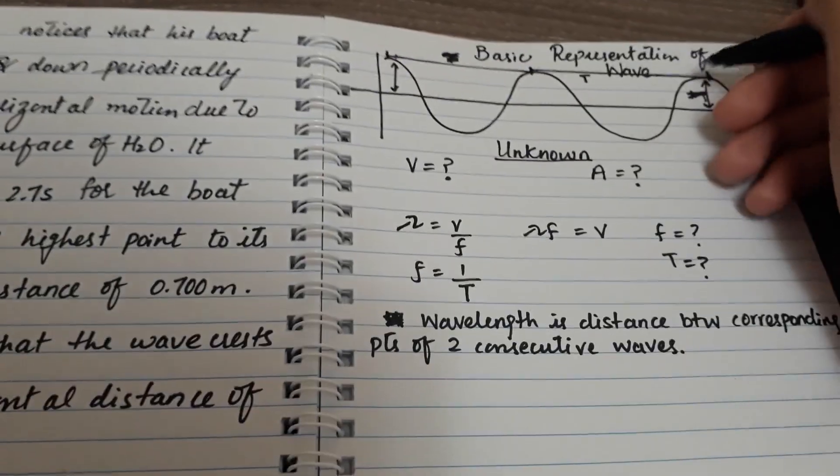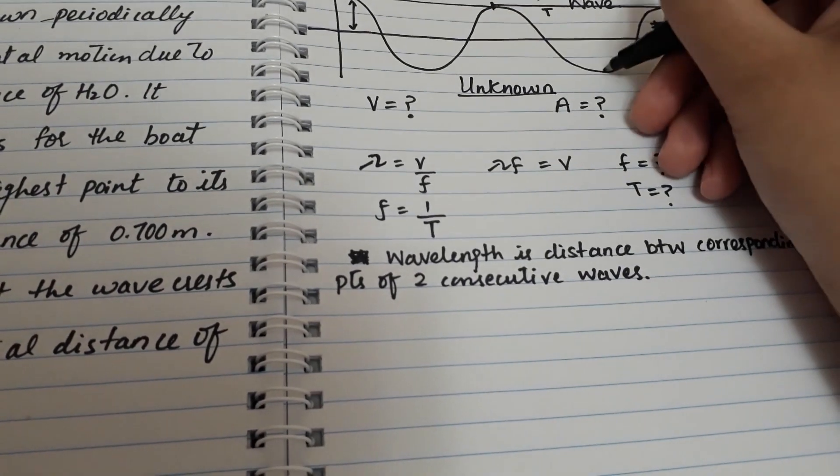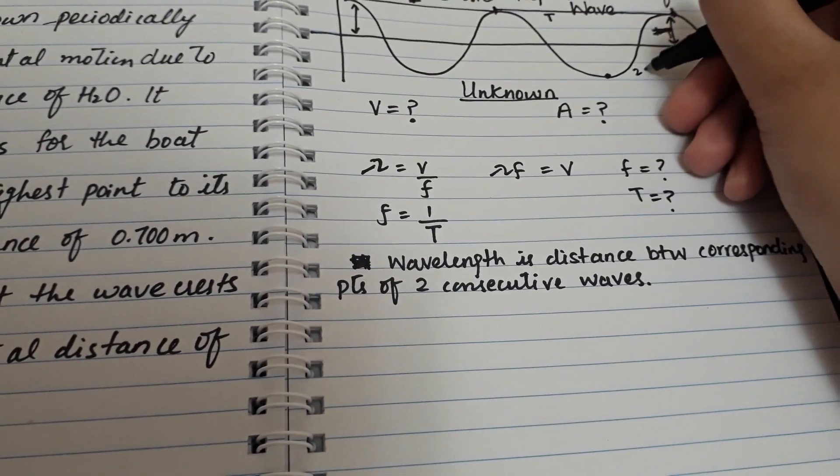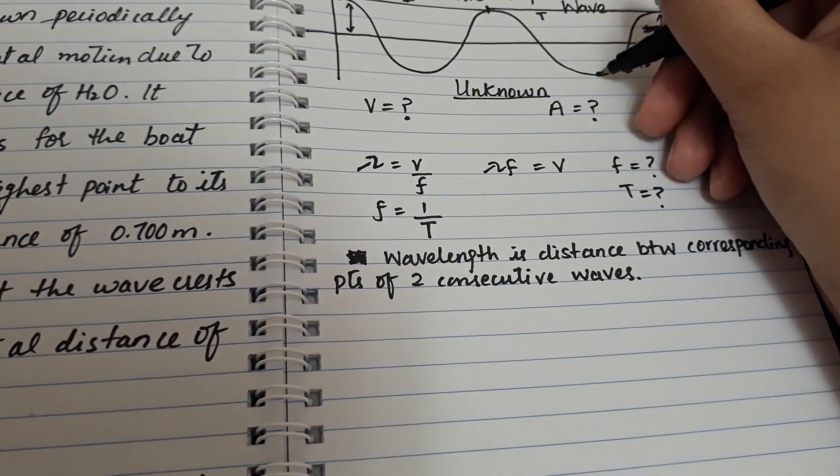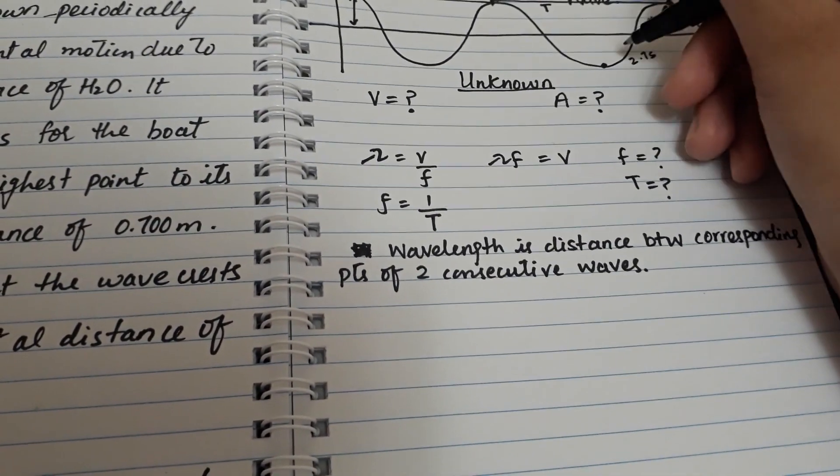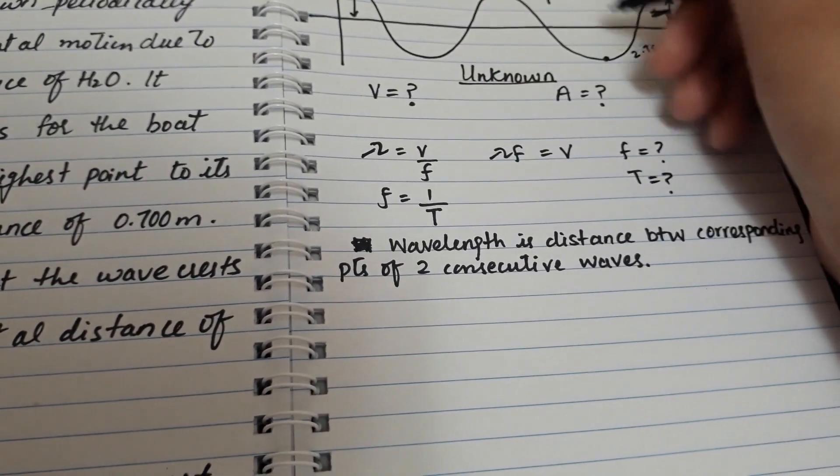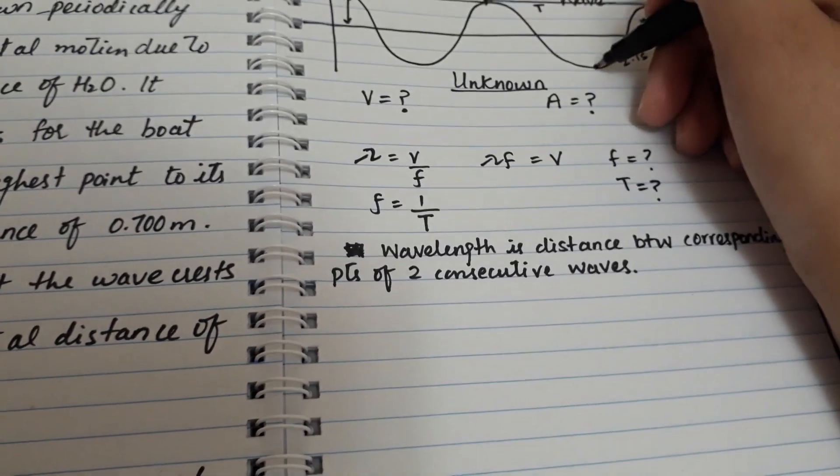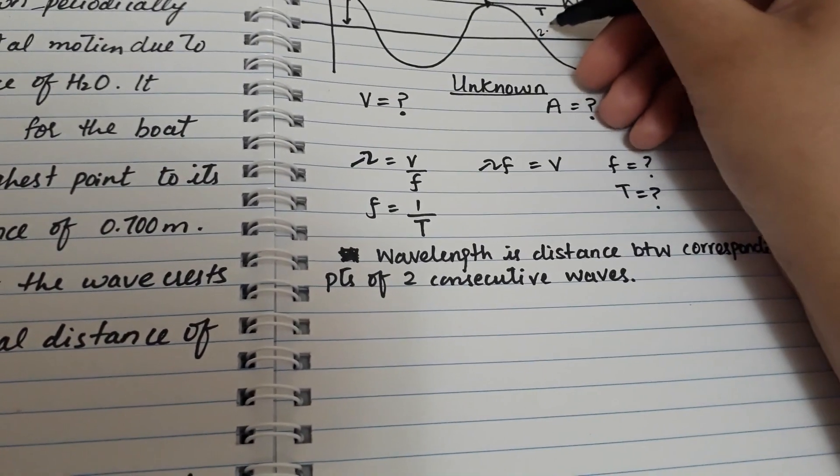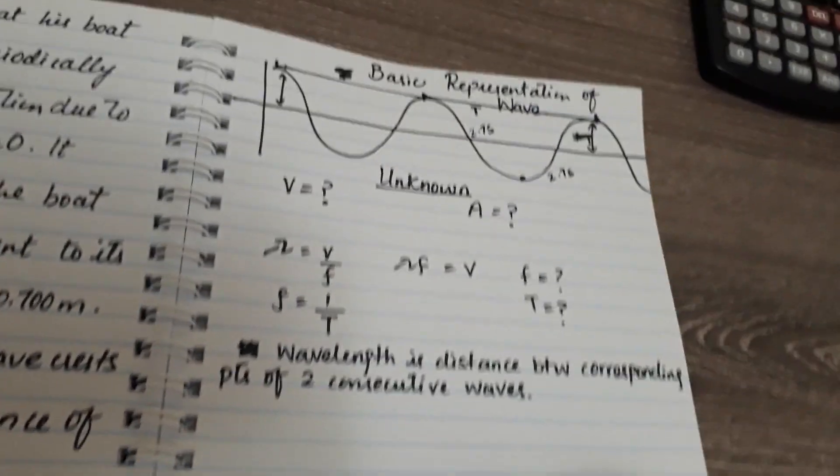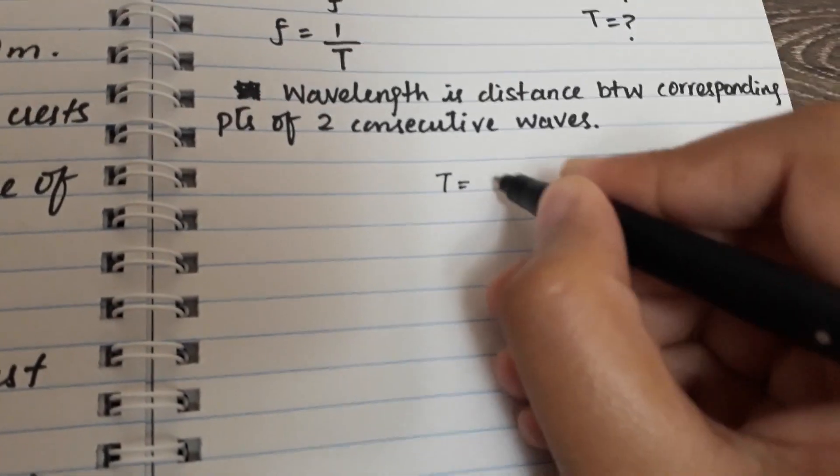Since I know that the wave travels from the highest point to the lowest in a time of 2.7 seconds, and from the definition of a period I know that the period goes from crest to crest or from trough to trough. So from here to here it's 2.7 seconds, and from here to here it's also 2.7 seconds. This helps me find my period, which is